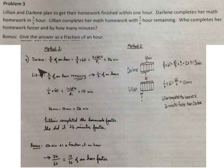Method 1. Darlene completed hers in 3/5 of an hour. 3/5 times 60, 36 minutes. Lillian completed hers with 5/6 of her hour remaining. That means she completed it in 1/6 of an hour. 1/6 of 60 is 10 minutes. 36 minutes minus 10 minutes is 26 minutes. Lillian completed her homework faster, and she did it 26 minutes faster.